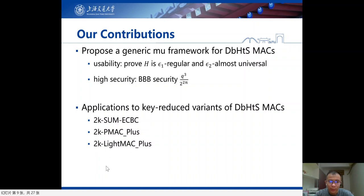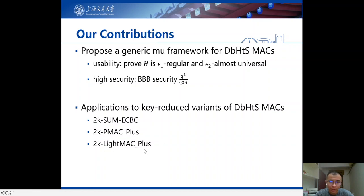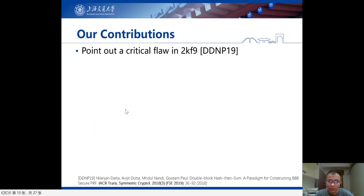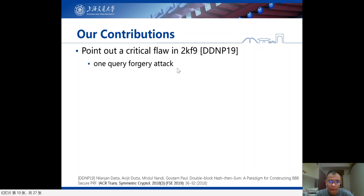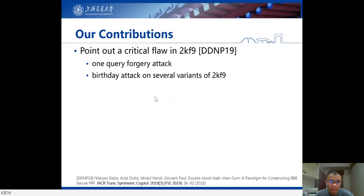There is a remaining DBH MAC called 2KF9. For this one, we cannot prove its security. Instead, we find a critical flaw in it. This construction was proved by Data et al. in FSC 2019 to achieve beyond-birthday bound security. But unfortunately, we find that one query is enough to forge an attack. We also show a birthday bound attack on several variants of 2KF9.